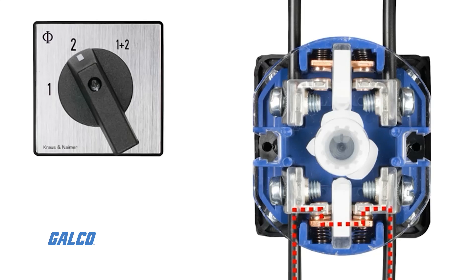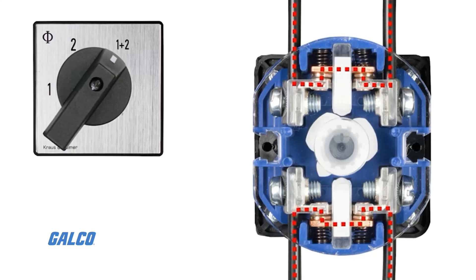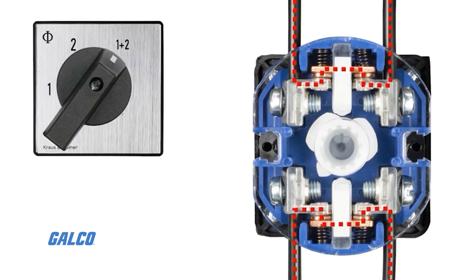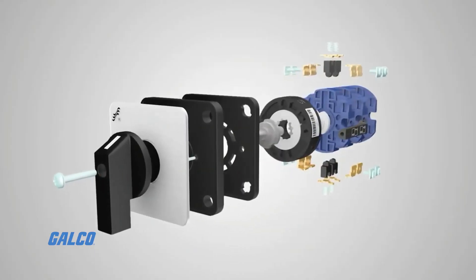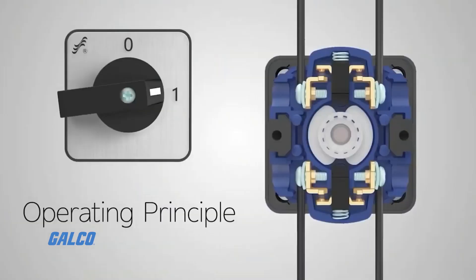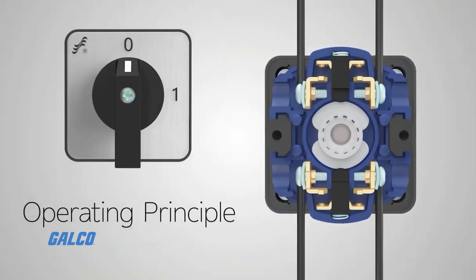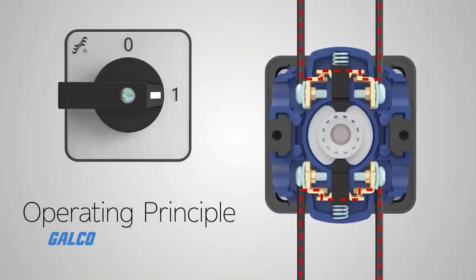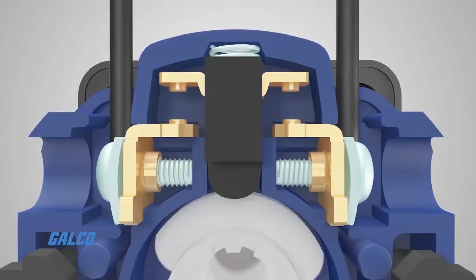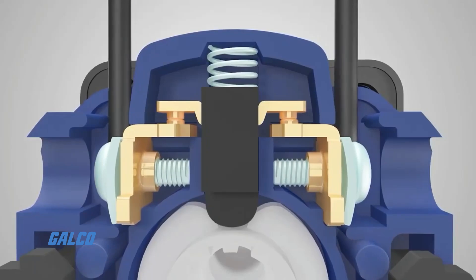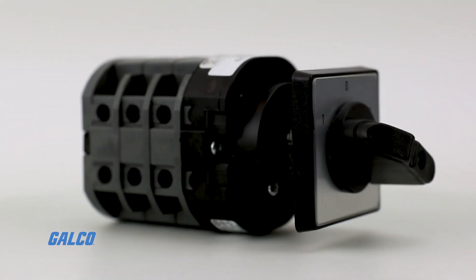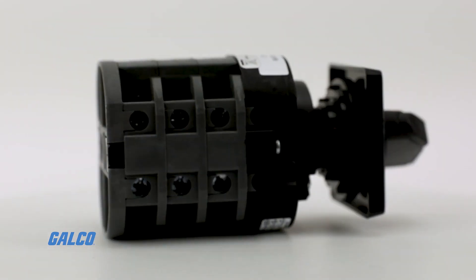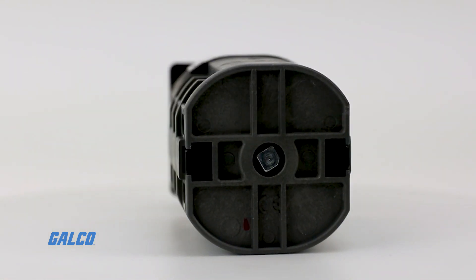The object that tracks the cam's movement is called the follower, which causes linear motion or some other type of action to occur. In simpler terms, whatever you need to be moved up and down or back and forth rests on top of the cam — its shape will move the object it supports as the cam rotates.